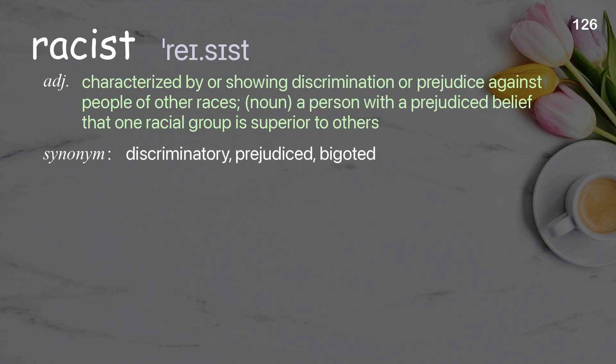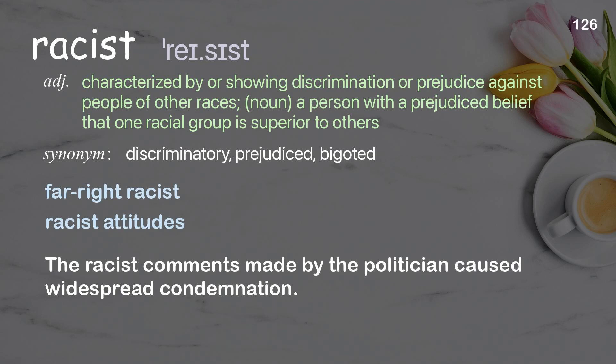Racist: characterized by or showing discrimination or prejudice against people of other races. Noun: a person with a prejudiced belief that one racial group is superior to others. Examples: far-right racist, racist attitudes. The racist comments made by the politician caused widespread condemnation.